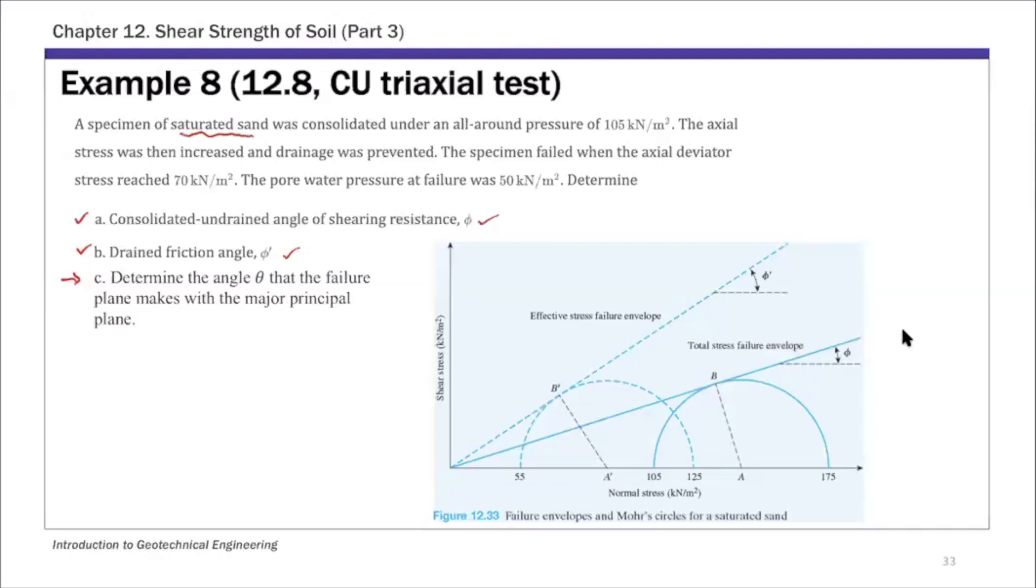This all-around pressure is basically the confining pressure. This confining pressure, which is also the minor principal stress sigma 3, is 105 kPa. The drainage was prevented when you apply that axial stress. This basically tells you this is undrained condition, a CU triaxial test, consolidated undrained test. The specimen failed when the deviator stress reached 70 kPa.